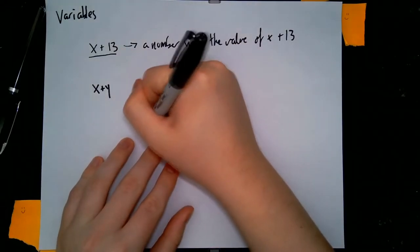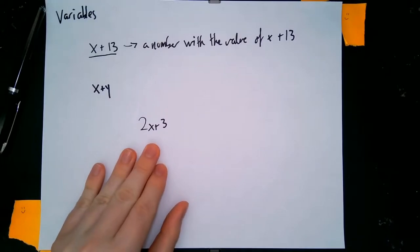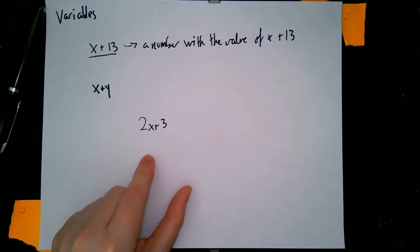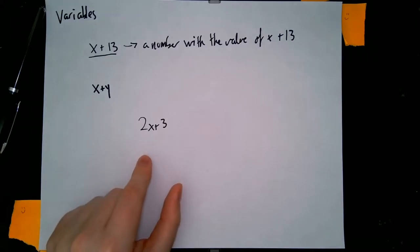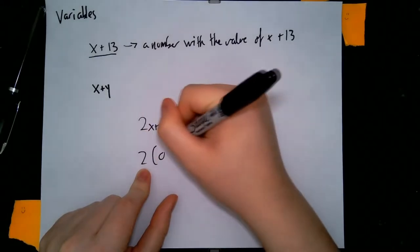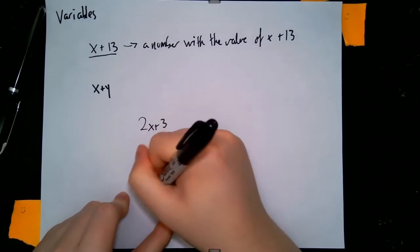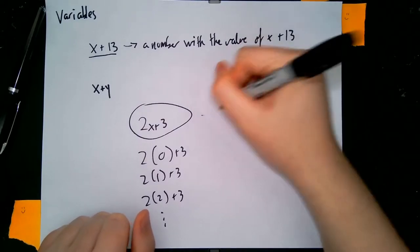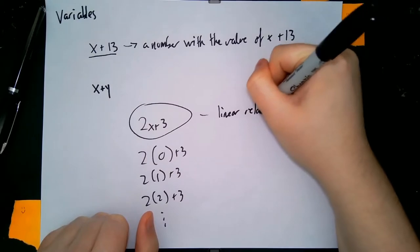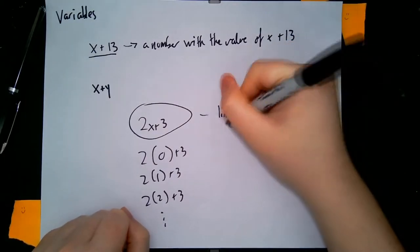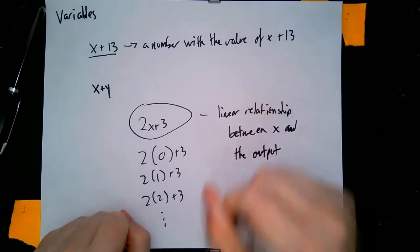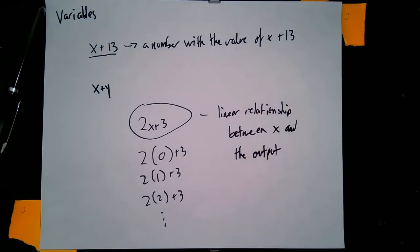If we look at 2x plus 3, looking at all possible values of the output for every possible value of x is much more powerful than plugging in every single value. For example, if x ranged over the natural numbers, we'd have to manually compute 2 times 0 plus 3, 2 times 1 plus 3, 2 times 2 plus 3, and so on. But looking at 2x plus 3, we know this is a linear relationship between x and the output. So there are many times where it's useful to talk about variables when working with numerical statements.